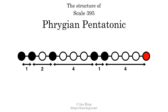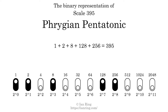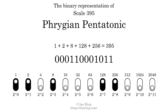The binary representation of this scale is determined by mapping tones of the scale to binary digits. Each binary digit represents a power of 2. To get the scale number, we add the powers of 2 together. The powers of 2 that are present in the scale, all added together, equals 395. That is why the scale number, in decimal, is 395.